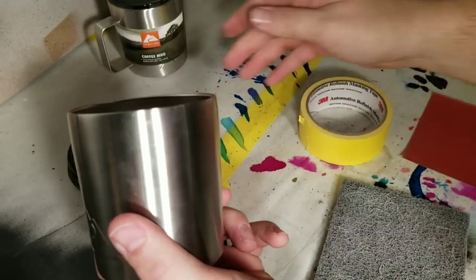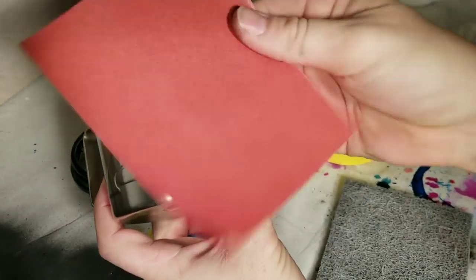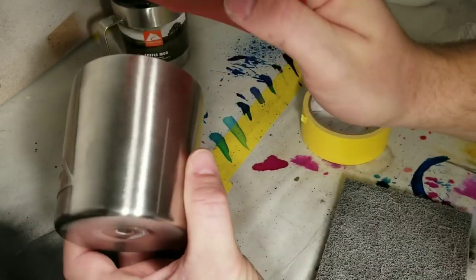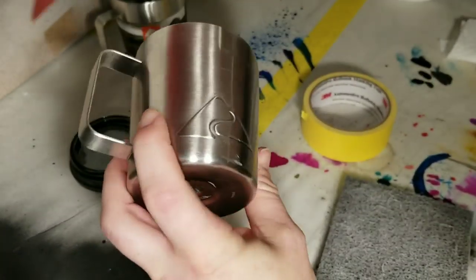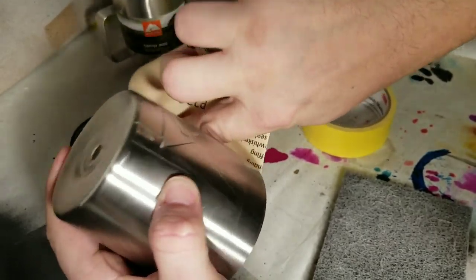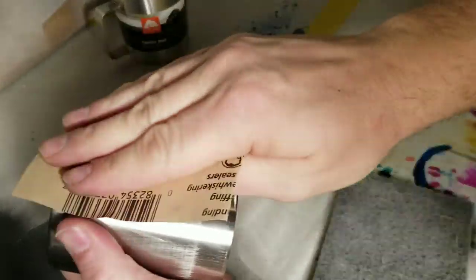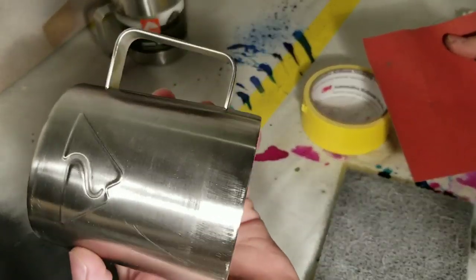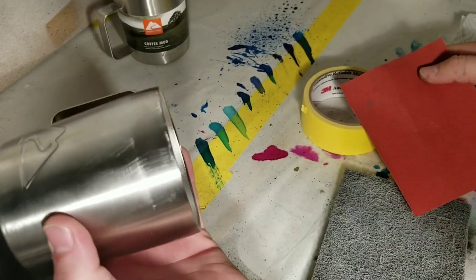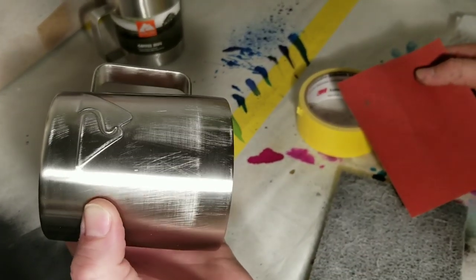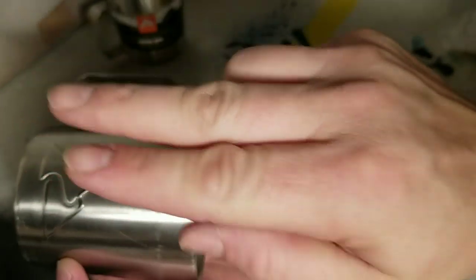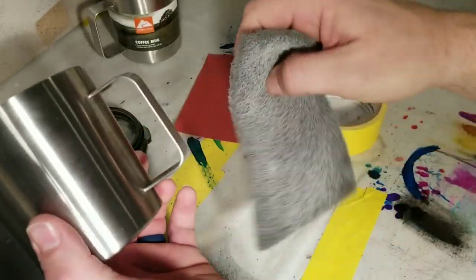Alright, so you remove your lid. The first thing you're gonna want to do is grab a 220 grit sandpaper and sand this bad boy up all over. Be pretty aggressive. Don't forget the bottom, don't forget all the intricate parts, every single spot. Some spots are really hard to get. You can see how it's scratching. You want to get it as dull looking - see the difference? Shiny versus dull.